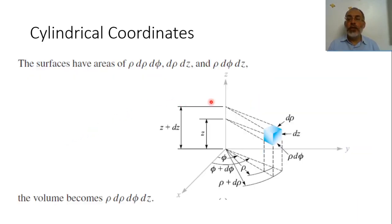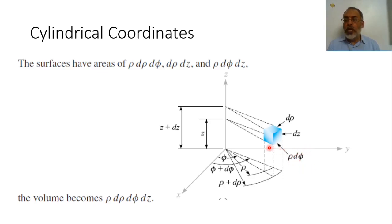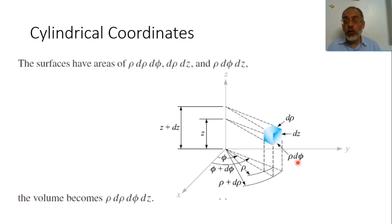When talking about an incremental element around a point in cylindrical coordinates, we move delta rho in the rho direction, delta z in the z direction, and rho·delta_phi in the phi direction. The arc length is not delta phi, but the radius multiplied by the angle delta phi. Note that delta phi is in radians, not degrees. If delta phi extends from 0 to 2π, we are talking about the total circumference of a complete circle.